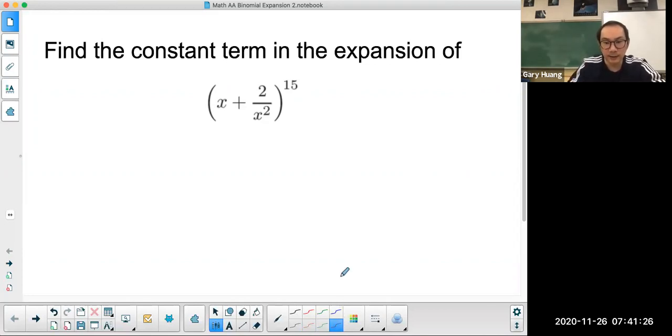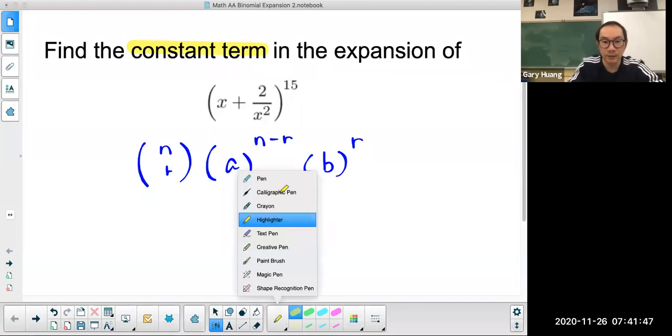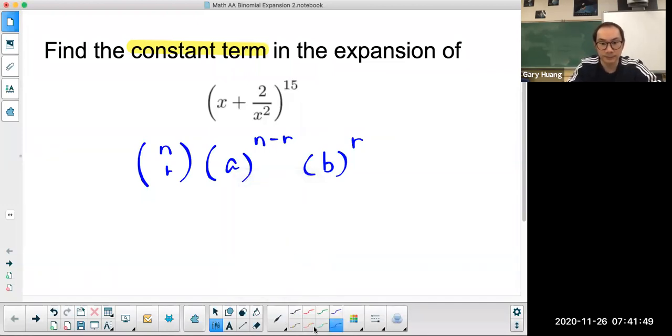So the first thing you want to write down is the binomial theorem, which is n choose r, a to the power of n minus r, and b raised to the power of r. The key word here is constant term. Now what does that mean? Well, the constant term is when you don't have a variable, and more specifically the exponent on the variable is equal to zero.